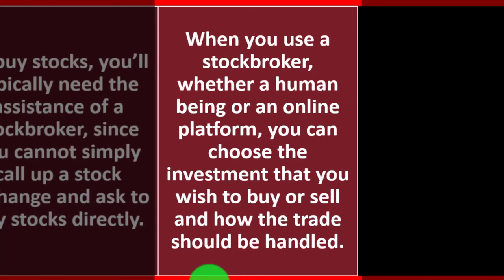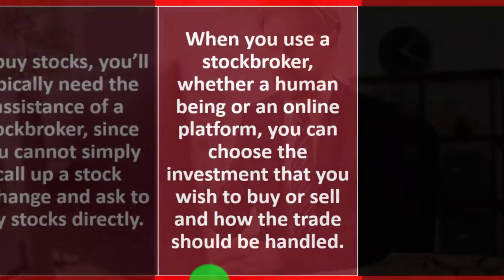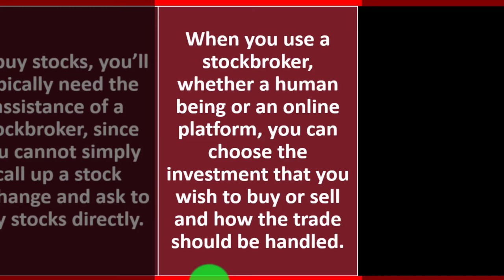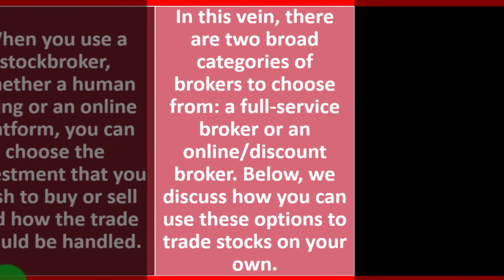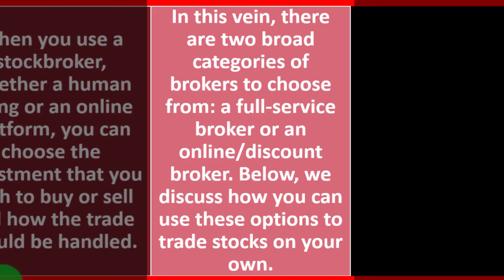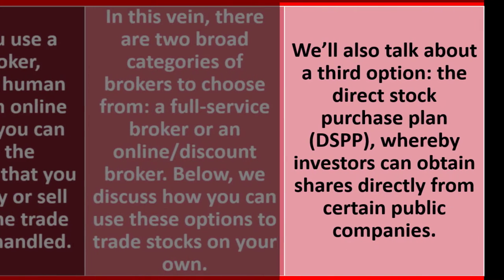When you use a stock broker — whether a human being or an online platform — you can choose the investment you wish to buy or sell and how the trade should be handled. There are two broad categories of brokers: a full service broker or an online discount broker. We'll also discuss a third option, the Direct Stock Purchase Plan (DSPP), whereby investors can obtain shares directly from certain public companies.